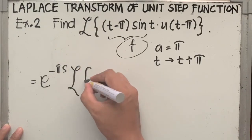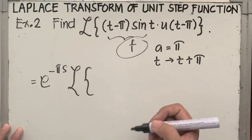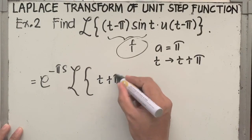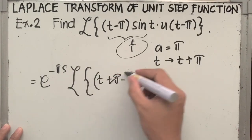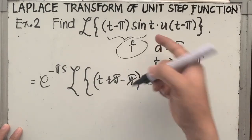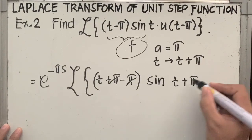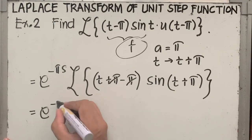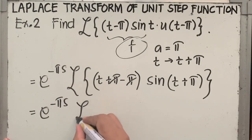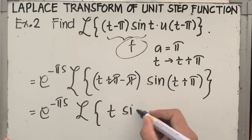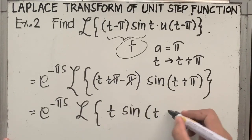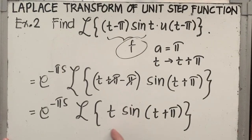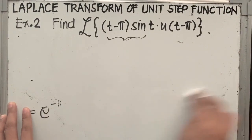Plugging in t plus pi in function f only: first write e raised to minus pi s before the operator. The t term becomes t plus pi, then copy minus pi — these cancel. Sine of t becomes sine of t plus pi. Make sure to properly write the grouping symbols. So we have e raised to minus pi s times the Laplace of t times sine of t plus pi. Notice that there is t in the resulting function inside the operator, so we are to use differentiation of the Laplace transform, or the multiplication-by-t property.